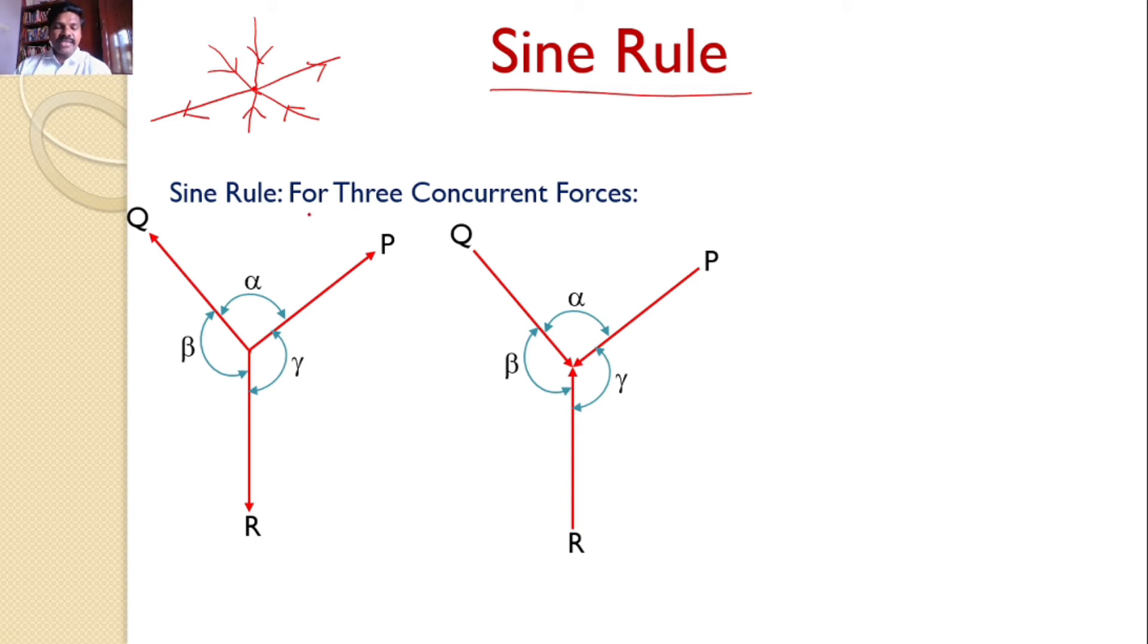If a system is subjected to three concurrent forces and all these three forces are arranged like this, that means either in the divergent or may be in the convergent.